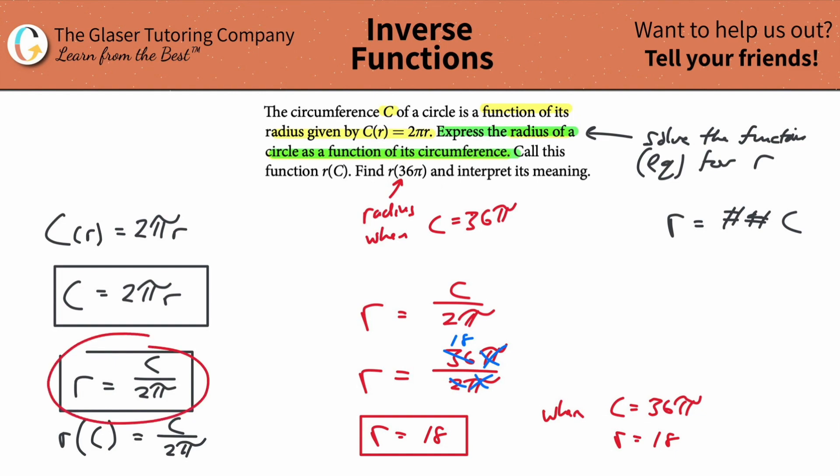You did not have to use this formula to solve it. You could have used this one. In other words, you could have plugged in 36π for the circumference here and then did a little algebra to find the radius. Doesn't matter. They're both going to be the same in the end.